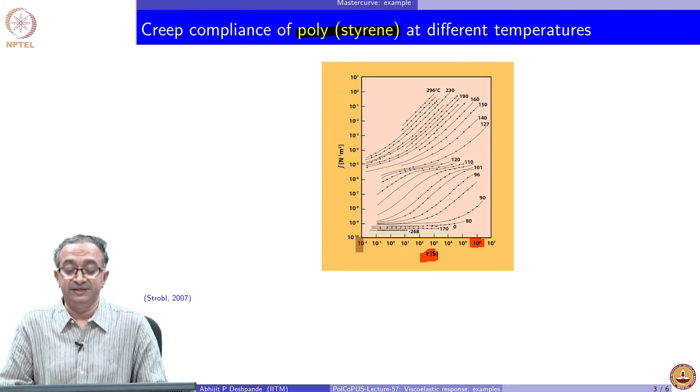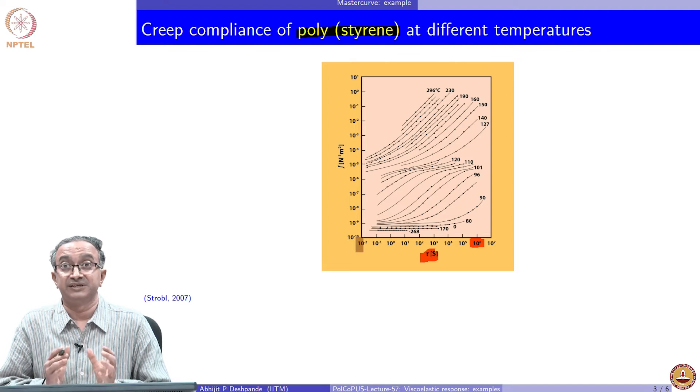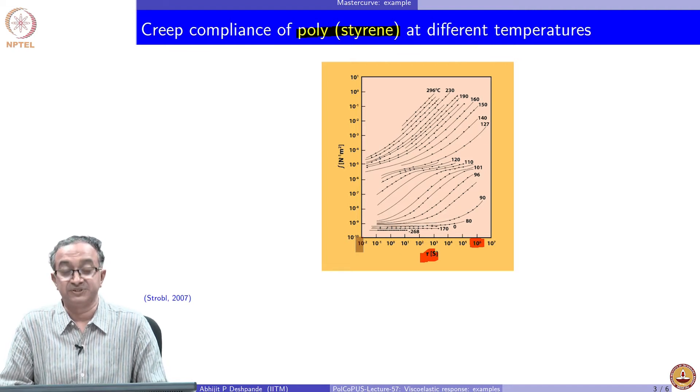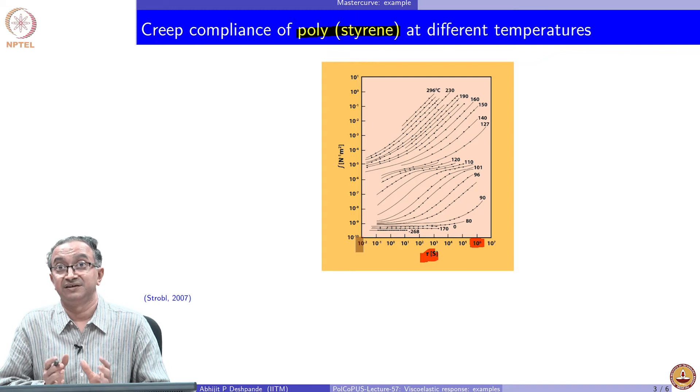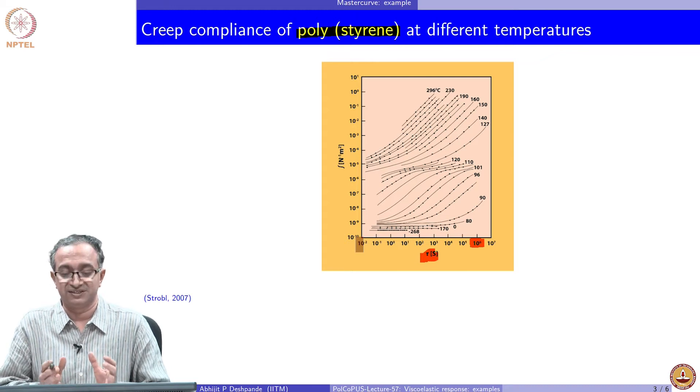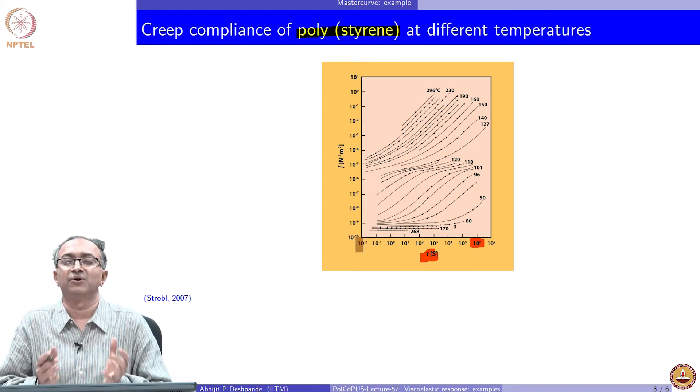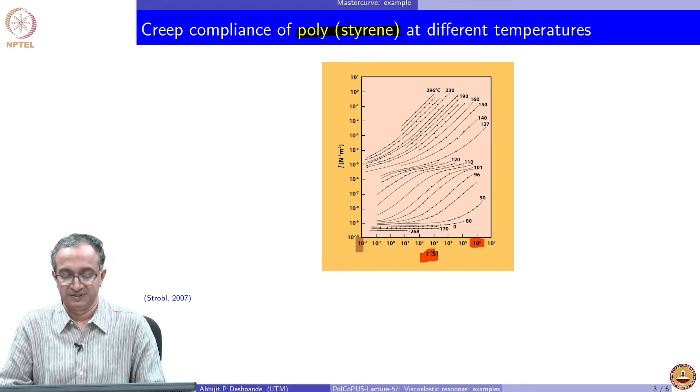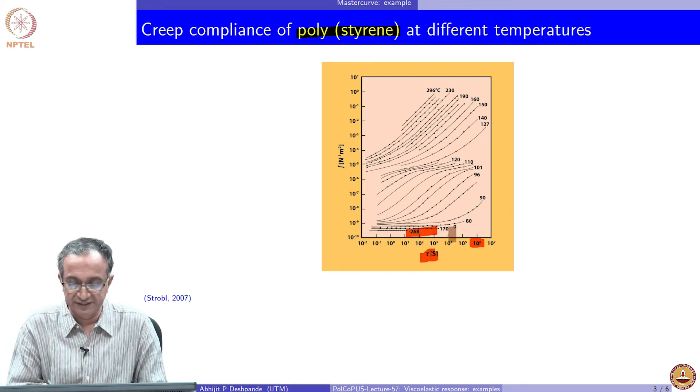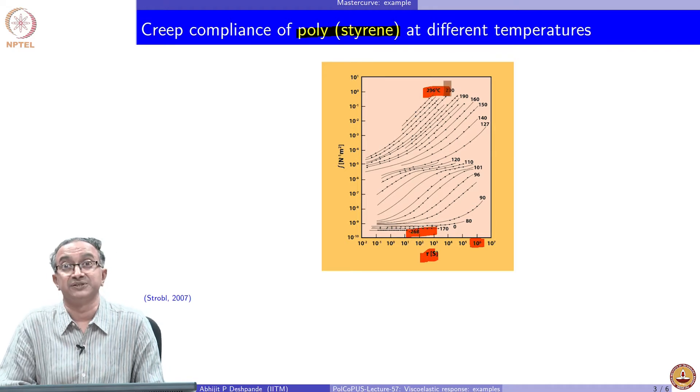And what you can see is the experiment is done at several different temperatures and look at the range of temperature. That is why such data is part of all the textbooks related to polymers. The temperature is varied from very low temperature to very high temperature.